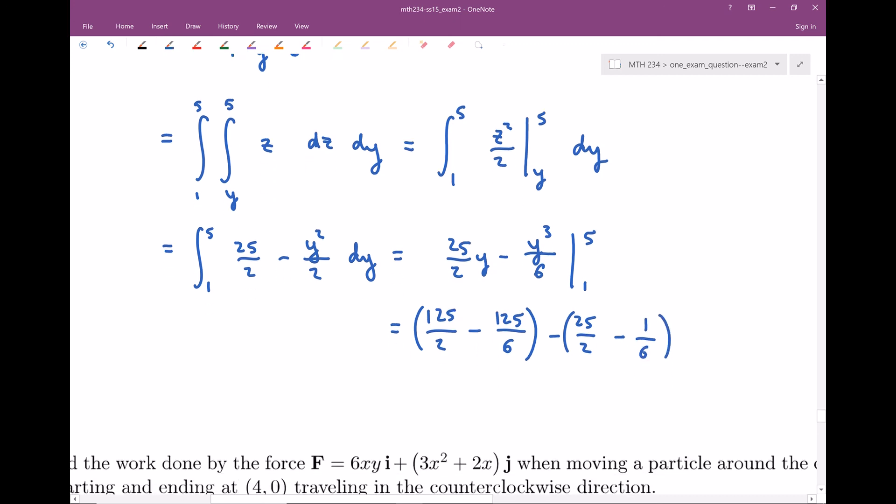Let's combine our like terms. We have 125 halves and we're subtracting away 25 halves, so that's gonna be 100 halves. Then we have negative 125 sixths, and we're gonna subtract away, that's the same thing as adding one. If I add one to that, adding one is gonna drop down this negative. So instead of negative 125 sixths, it's gonna be negative 124 sixths. 100 halves is the same thing as 50. And this is gonna be minus 62 thirds.